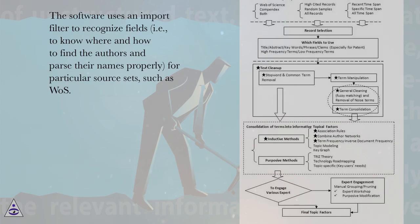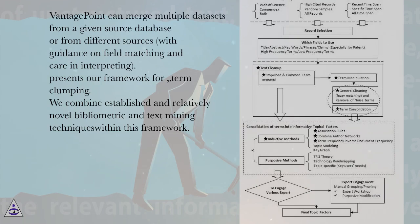The software uses an import filter to recognize fields, i.e., to know where and how to find the authors and parse their names properly, for particular source sets, such as Web of Science. Vantage Point can merge multiple data sets from a given source database or from different sources, with guidance on field matching and care in interpreting.